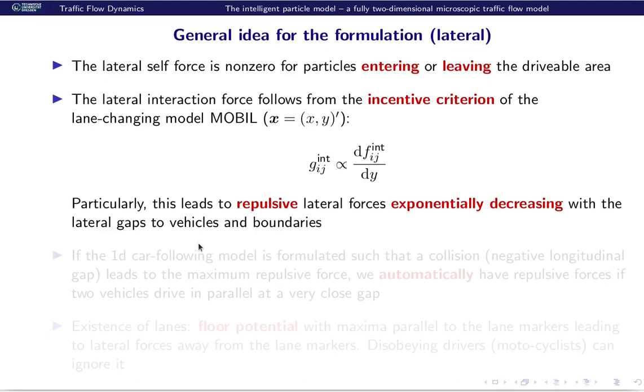The crucial concept of our model is derived from the incentive criterion of the lane changing model MOBILE. The MOBILE says, I want to change lanes if I can drive faster on the other lanes, that means if the acceleration there is higher. And we generalize this to 2D by demanding that the lateral force is proportional to the gradient of the longitudinal force, the longitudinal acceleration within the lateral direction. This automatically leads to repulsive forces which are also exponentially decreasing if the lateral gaps to vehicles and boundaries increase.